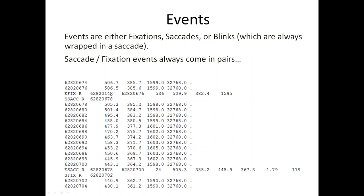When an event ends you get extra information. When a fixation ends you get: its start time, end time, duration in milliseconds, average X and Y location over the duration, and average pupil size. When a saccade ends you get: start time, end time, duration in milliseconds, X and Y at the beginning and end of the saccade, the amplitude, and peak velocity in degrees of visual angle per second.